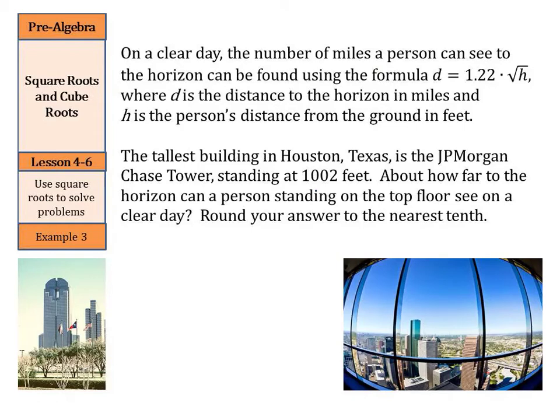A word problem: on a clear day, the number of miles a person can see to the horizon can be found using the formula d equals 1.22 times the square root of h, where d is the distance to the horizon in miles, and h is a person's distance from the ground in feet. The tallest building in Houston, Texas, is the JP Morgan Chase Tower, standing at 1,002 feet. About how far to the horizon can a person standing on the top floor see on a clear day? That is the JP Morgan Chase Tower, and on the right is the view from the observation deck.